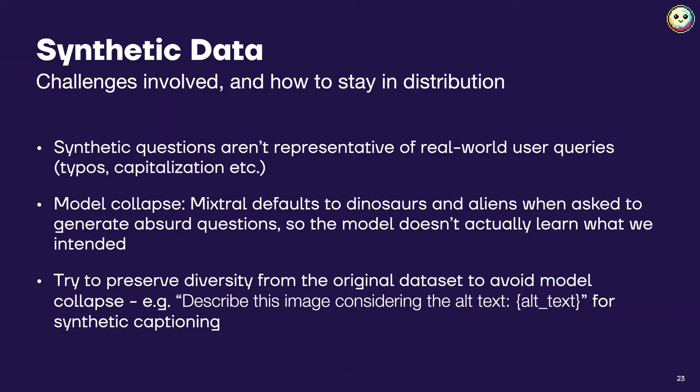There's also this risk of what we call model collapse, where your model has biases inherent to the LLM you're using for data generation. For example, if you try to ask Mixtral to generate distractor questions — just generate a question that's completely irrelevant to the image — it will always generate something about dinosaurs and aliens. If you train your model on that, it will instead learn to say, if the question is about dinosaurs and aliens, always say no, which doesn't really help. You need to inject some entropy into the process of generating synthetic data to avoid this. In the case of synthetic captioning, you can do something like: describe this image, but also consider the alt text on the image, which may be noisy or irrelevant, but if it is relevant, use relevant facts from it. That tends to help a lot.